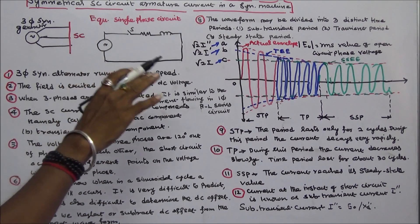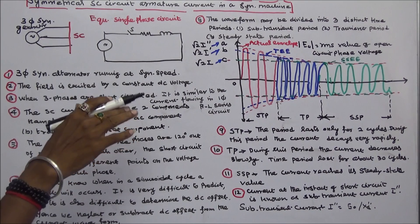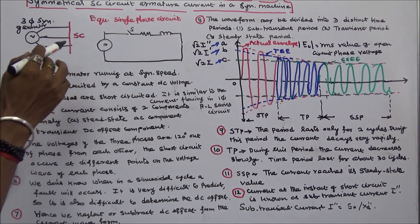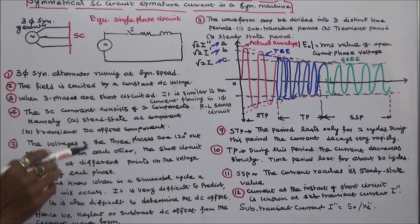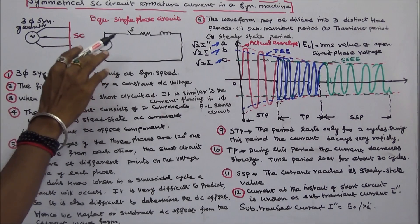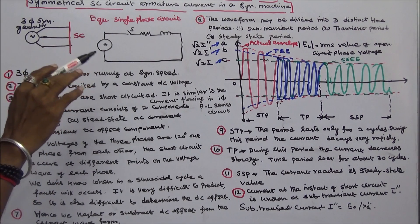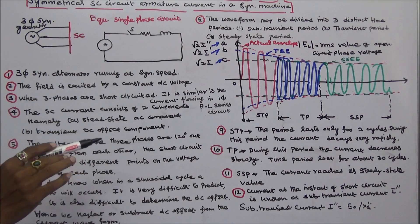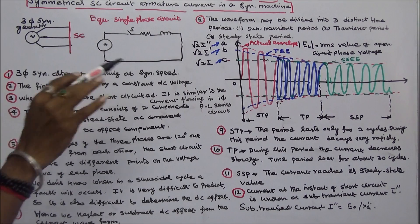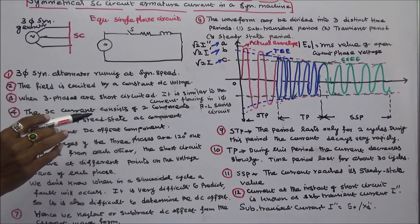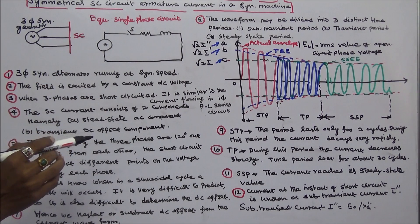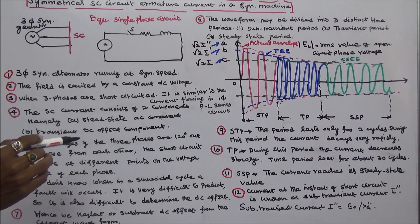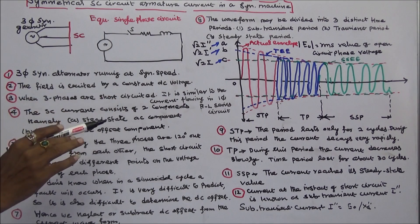A three-phase synchronous alternator running at synchronous speed has its field winding excited by a constant DC voltage. When three phases are short-circuited, it is similar to current flowing in a single-phase RL series circuit. The short-circuit current consists of two components: a steady-state AC component, and a transient DC offset component. The voltages of three phases are 120 degrees out of phase from each other, and the short-circuit occurs at different points on the voltage wave of each phase.